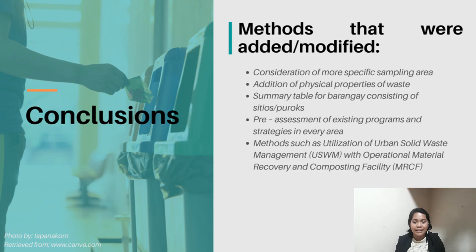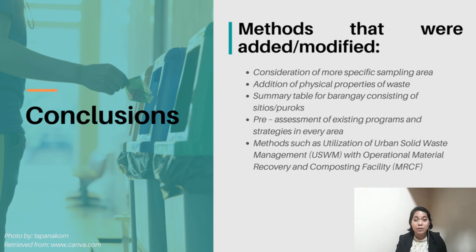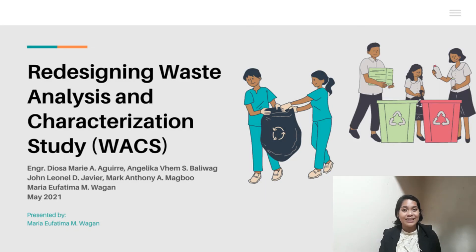In summary, the methods added to the WACS method are: (1) additional more specific sampling areas such as puroks and sitios; (2) additional physical properties such as moisture content and calorific value; (3) additional summary tables for sitios and puroks; (4) conducting of preliminary assessment before conducting WACS; and (5) utilization of USWM with an operational MRCF and incorporated effects of public participation. Based on these changes, more comprehensive data will be generated due to the additional properties of waste and specific sampling sites. By adopting the suggested methods, data will now reflect the improved waste management behavior of residents. That concludes our study — Redesigning Waste Analysis and Characterization Study, or simply Redesigning WACS.